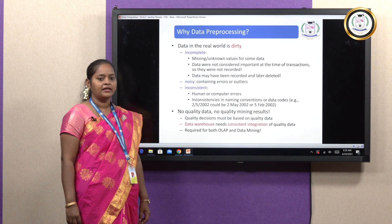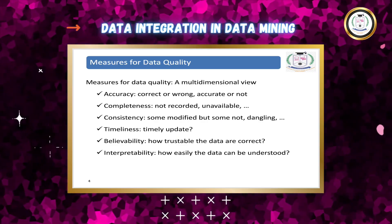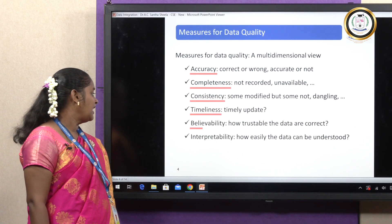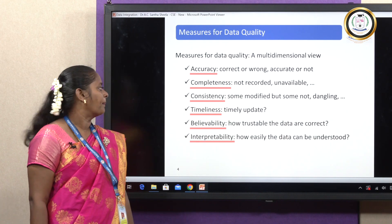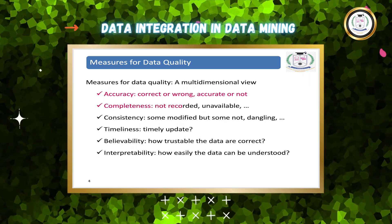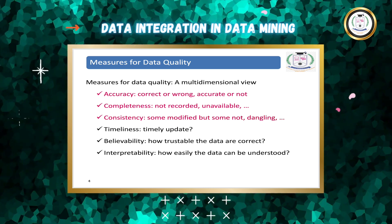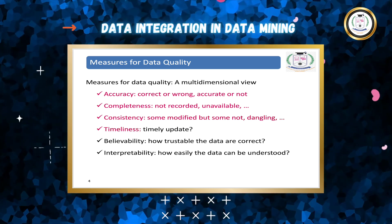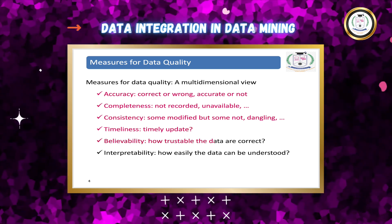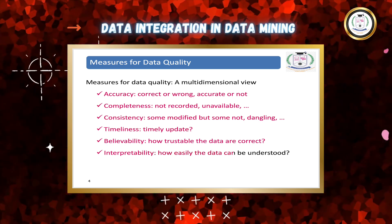Online analytical processing and data mining. Measures of data quality — in the multidimensional view: accuracy, completeness, consistency, timeliness, believability, interpretability. Accuracy: whether the data is correct or wrong. Completeness: data not recorded or unavailable. Consistency: some data modified but some not. Timeliness: whether the data is a timely updated one. Believability: how trustable the data are recorded. Interpretability: how easily the data can be understood.